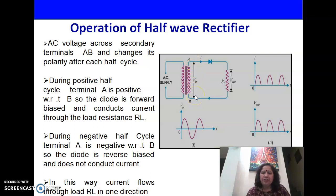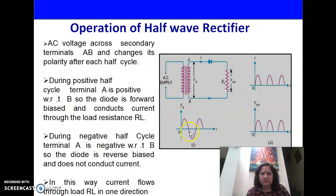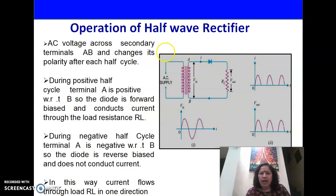The AC supply changes its polarity after every half-cycle. During the positive half-cycle, terminal A becomes positive and terminal B becomes negative. As a result, the diode is forward biased — it will act like a short and will allow current to flow through it and through the load resistance RL.